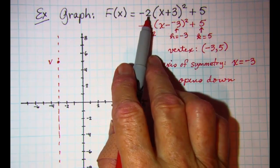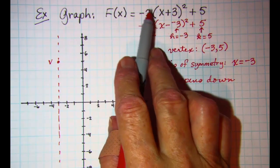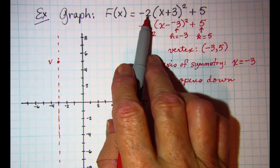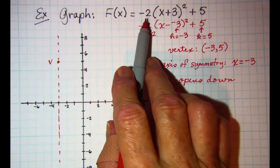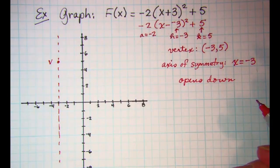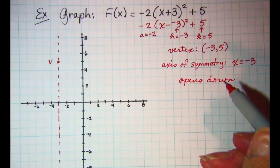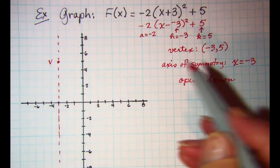And since a is negative 2, that means that each y value of our basic graph needs to be multiplied by negative 2.